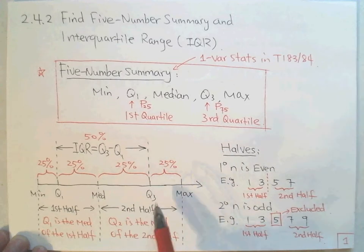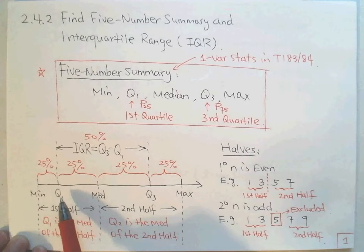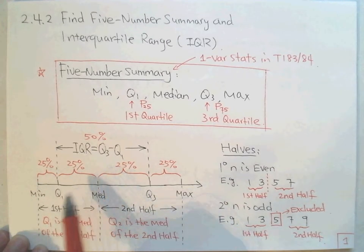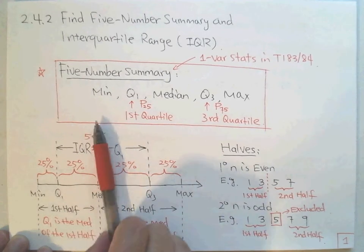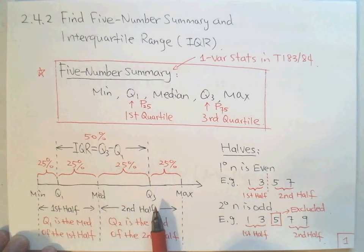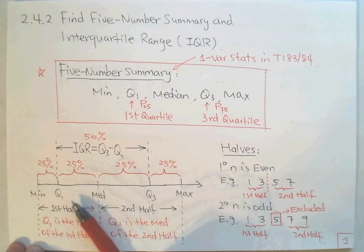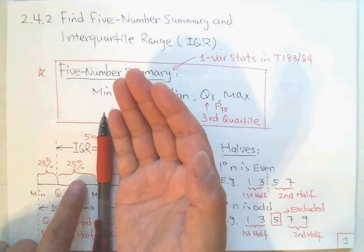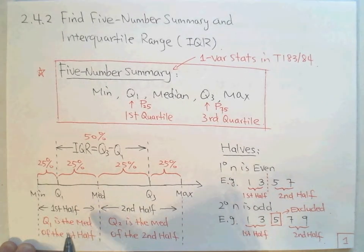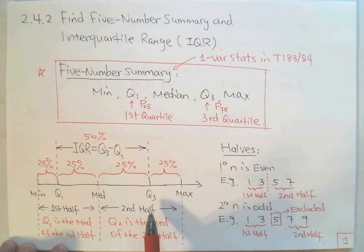Another understanding of Q1: the easiest way to find Q1, the 25th percentile, is to cut the data at the median into two halves — a first half and a second half. Q1 is the median of the first half, and Q3 is the median of the second half. Since we know how to find a median, it's easy to find Q1 and Q3 the same way.